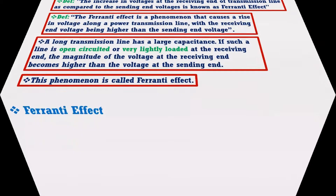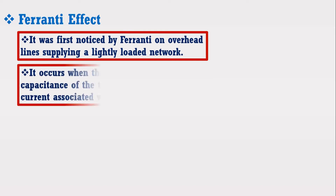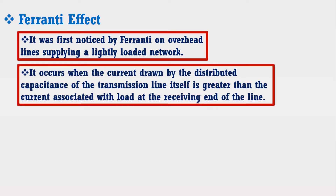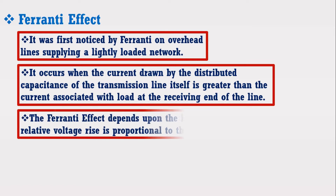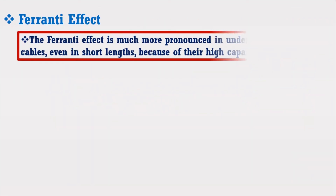It was first noticed by Ferrenti on an overhead line supplying a lightly loaded network. It occurs when the current run by the distributed capacitance of the transmission line itself is greater than the current associated with the load at the receiving end of the line. The Ferrenti effect depends upon the length and voltage applied, and the relative voltage rise is proportional to the square of the line length.